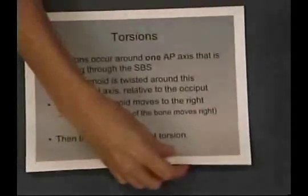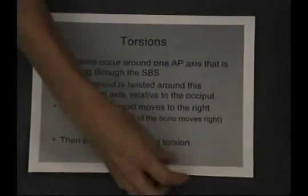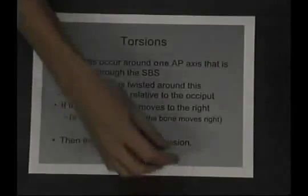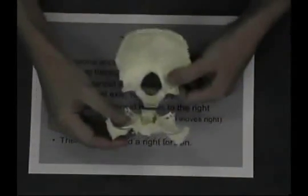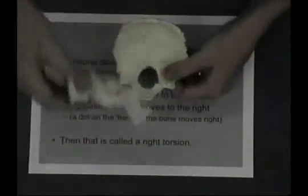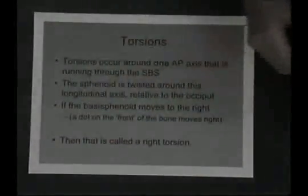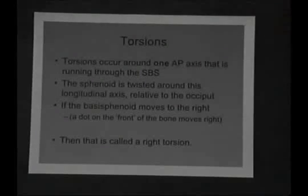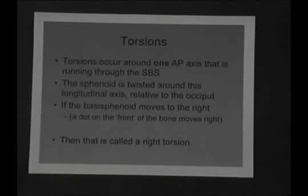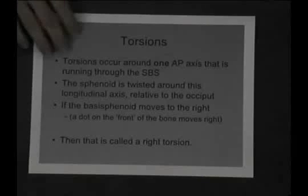Torsions occur around one AP axis — just one axis running through the sphenoid and the occiput. What we find is that the sphenoid and the occiput are rotating in opposite directions around that AP axis.